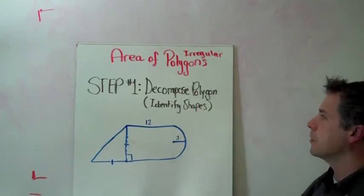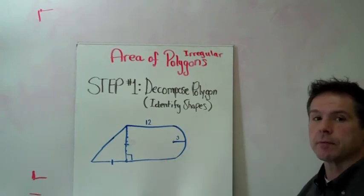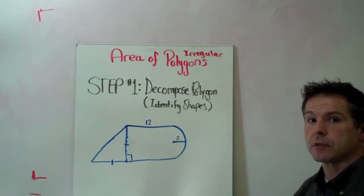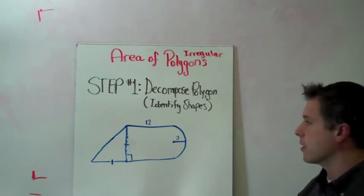So the first step is decompose the polygon. That means break the polygon or this geometric figure shape down into its more basic shapes. Shapes like triangles, rectangles, and circles, and parallelograms, etc. Those shapes we know how to find the area of.